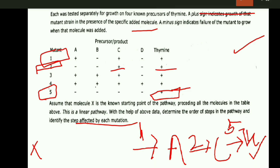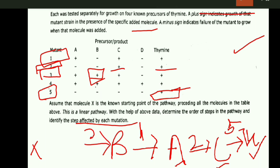In the case of mutant 3, there is growth in A, B, C, and thiamine. This suggests that A, B, C, and thiamine are placed after mutant 3. A, C, and thiamine are already positioned, so we need to position compound B. B is found here, and mutant 3 is found here.